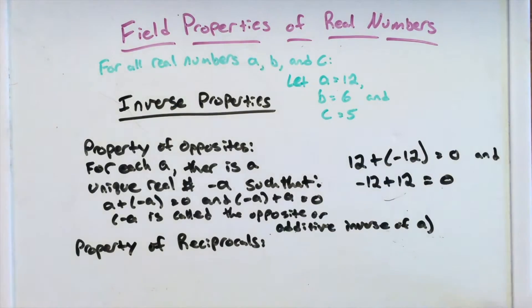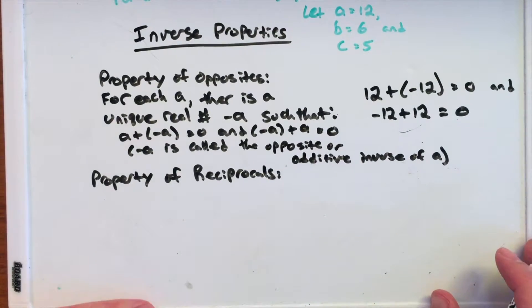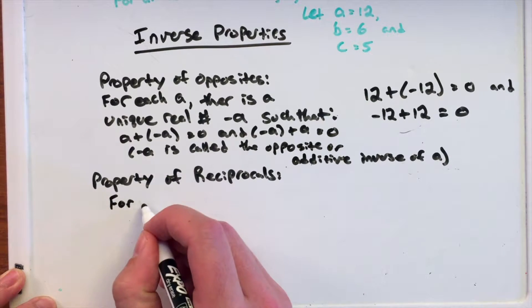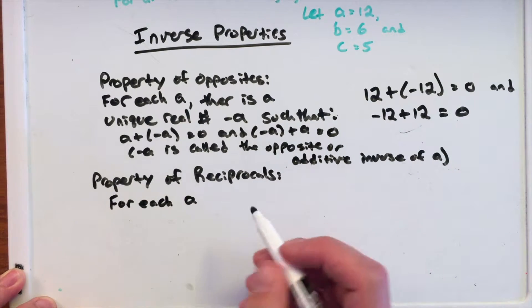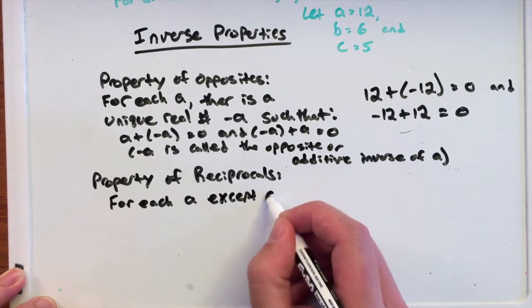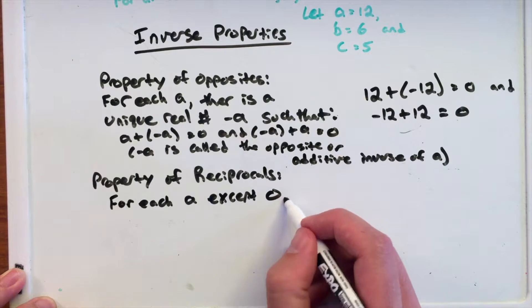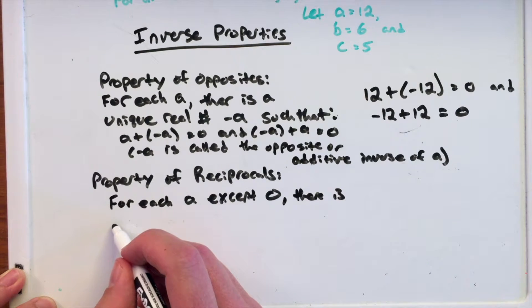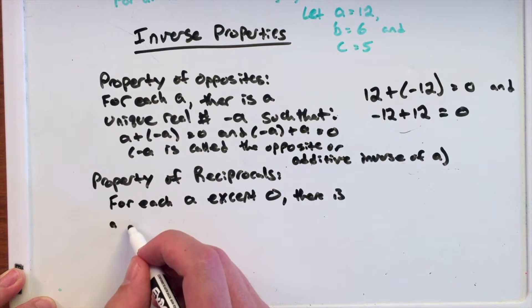Now, the property of reciprocals is a little more difficult and states for each A except 0, there is a unique, again, unique, real number.